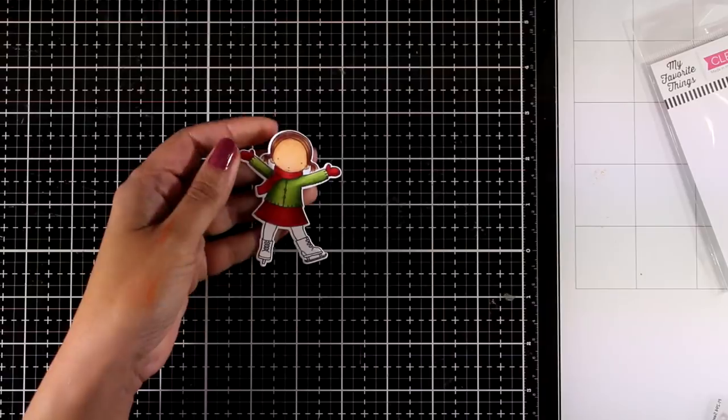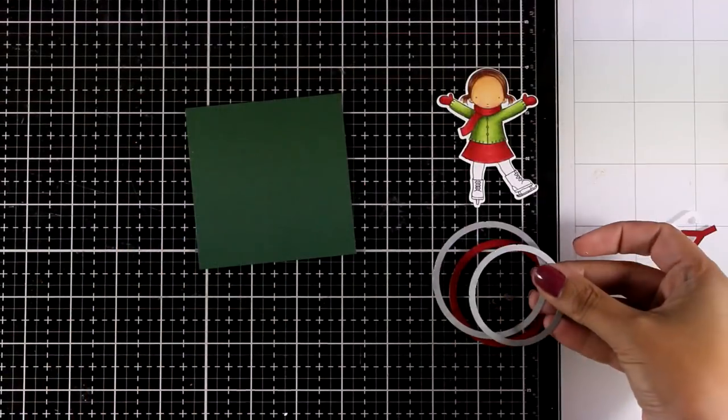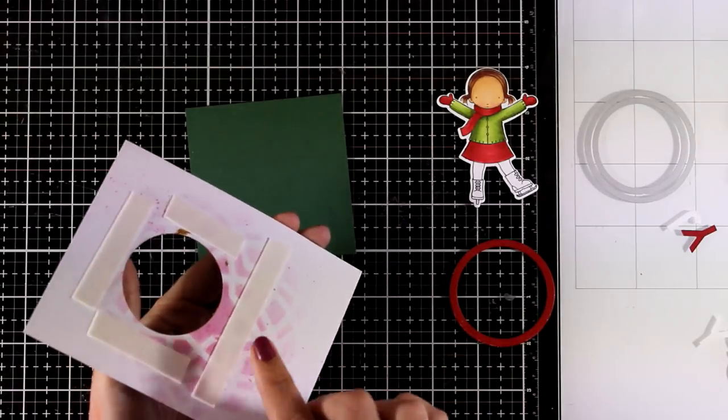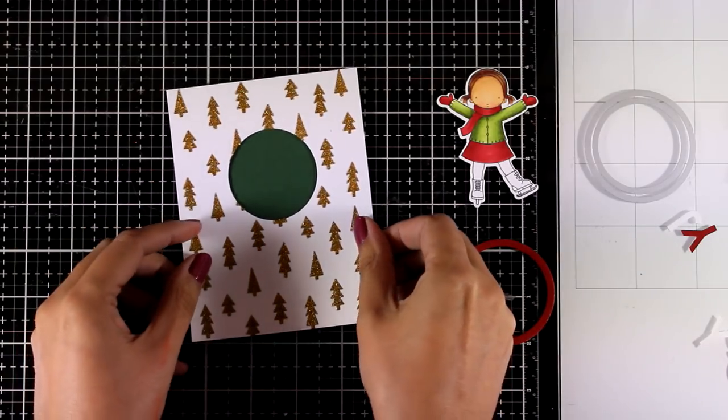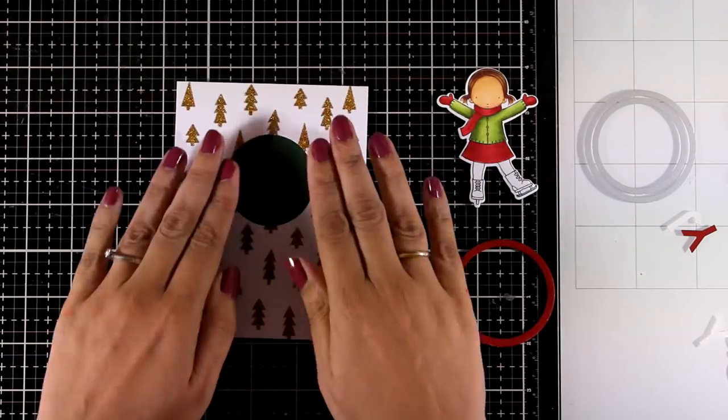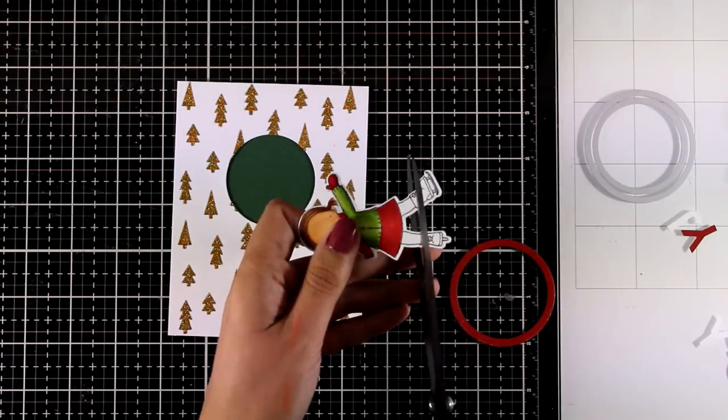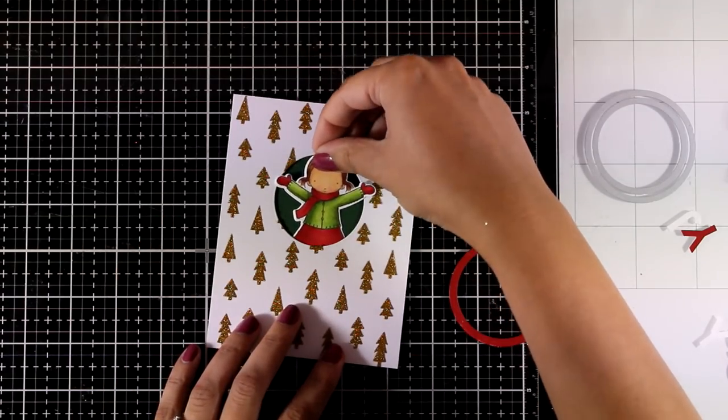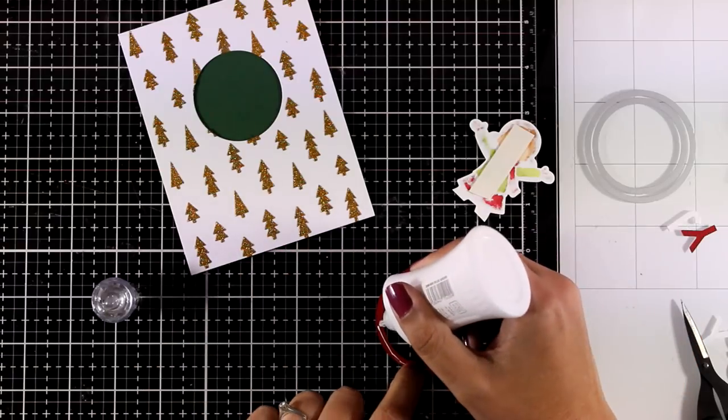Now it's time to put my card together. I used two dies, circle dies, one inside the other to create a little ring out of red cardstock. I do have some green cardstock which is going to go at the back of my window. Now my girl is going to go inside that window. Just to make sure that she is going to be nicely tucked in, I just chopped off her legs and now she fits nicely in there.